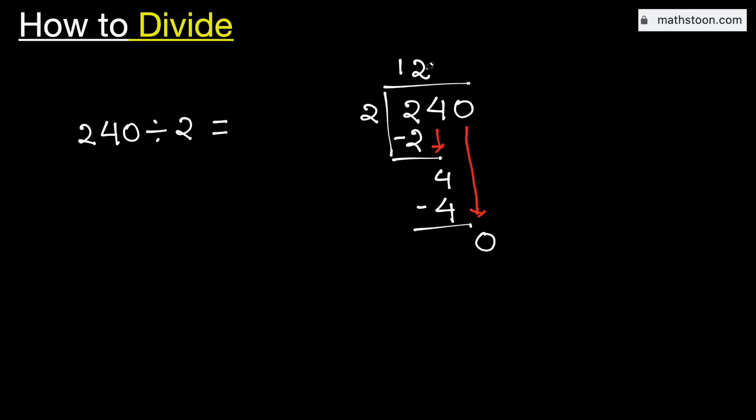And we know that 2 times 0 is 0. Subtract, we get 0. As we have no number to bring down here and got the number 0, so we will stop.